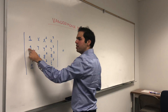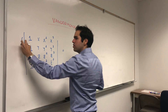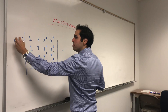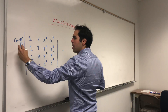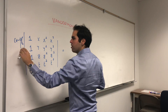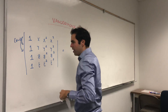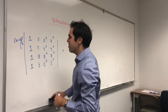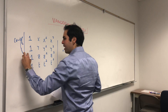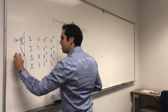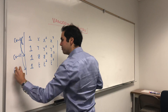So, let's try to get rid of all those ones. Let's subtract the first row from the second row, from the third row, and from the fourth row — minus 1, minus 1, and minus 1.